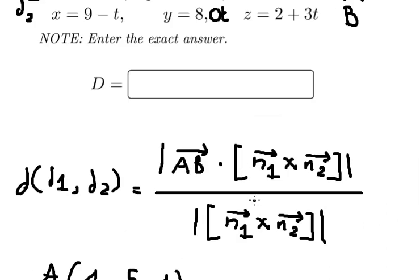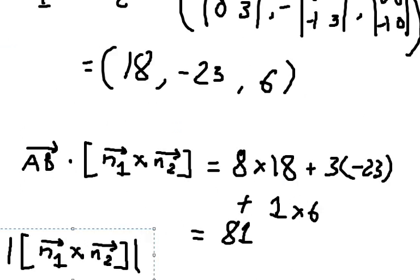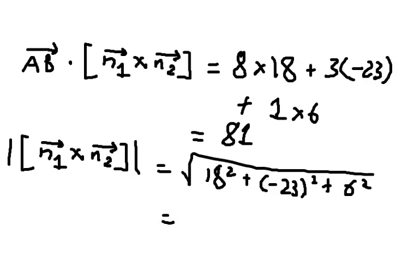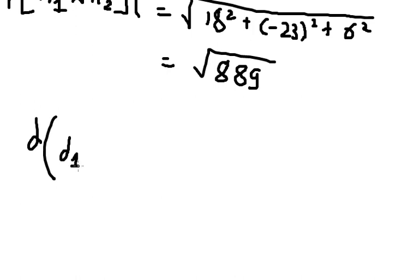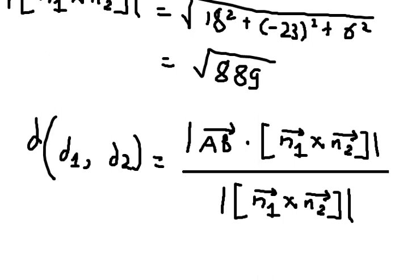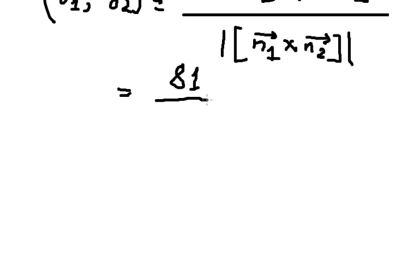Next, we need to calculate the magnitude of the cross product. That is the square root of 18 squared plus (-23) squared plus 6 squared, which gives the square root of 889. So the distance between d1 and d2 is found by putting 81 over the absolute value of √889.